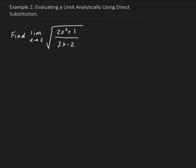In this case, we can use one of those properties of limits — using this one. If we have the limit as x approaches c of some function raised to some n power, then this is equivalent to the limit as x approaches c of that function, all raised to the n power.